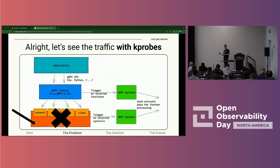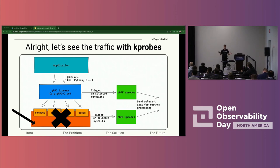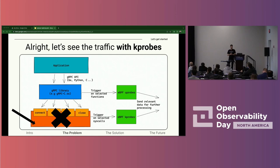If we were trying to observe the HTTP protocol, this would have worked phenomenally. We would have seen everything we would like to using just kprobes, but gRPC makes things harder. Let's understand why.